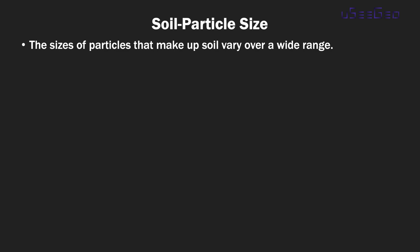First, the sizes of particles that make up soil vary over a wide range. Soils are generally called gravel, sand, silt, or clay, depending on the predominant size of particles within that soil. And to describe soils by their particle size, several organizations have developed particle size classifications.